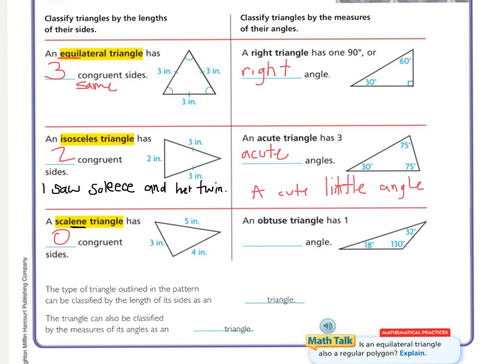A cute little angle means it's less than 90 degrees. The last one is an obtuse triangle, and it has one angle that is an obtuse angle — greater than 90 degrees. I think if I have 90 degrees here, the wide part would eat the 90 degrees. The large opening is greater than 90 degrees, so obtuse is the large angle.